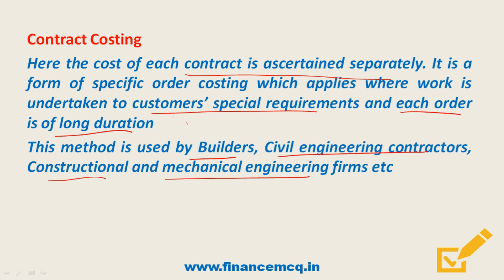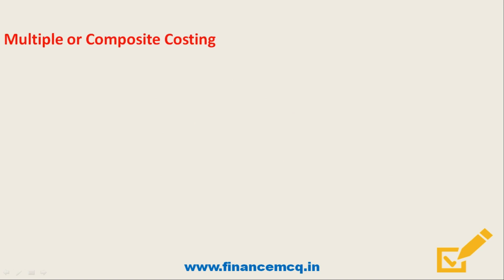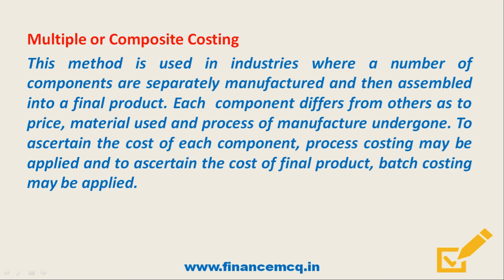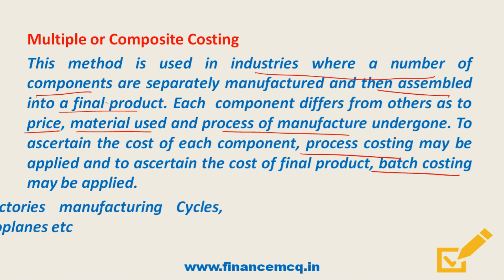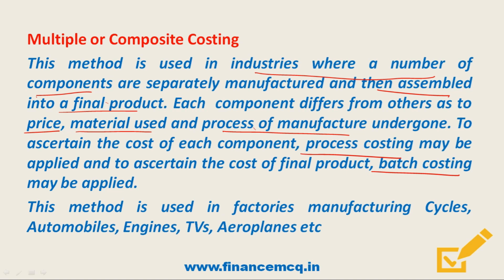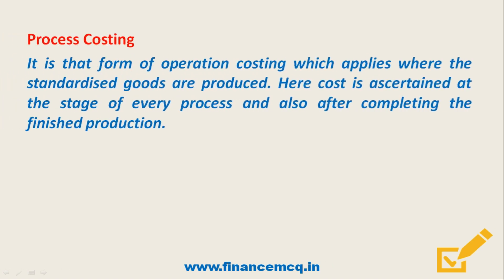Next is multiple or composite costing. This method is used in industries where a number of components are manufactured separately and then assembled into a final product. Each component differs from others as to price, material used, and process of manufacture. To ascertain the cost of each component, process costing may be applied, and to ascertain the cost of the final product, batch costing may be applied. This method is applicable in factories manufacturing cycles, automobiles, engines, TVs, and aeroplanes.